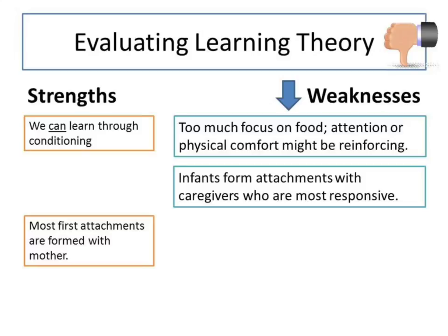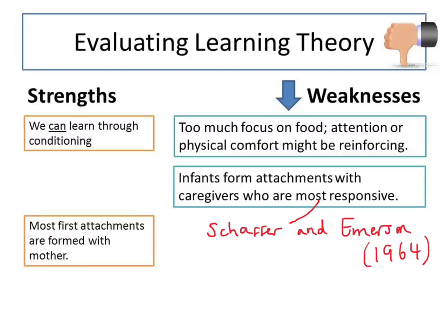Although most first attachments form with the mother, research suggests this is not necessarily about the food she provides. Schaefer and Emerson, for example, found that attachments were formed with the caregiver who was the most sensitive and responsive to the child. And this wasn't always the person that fed, bathed and did the most physical care for the child.